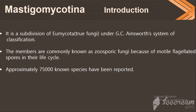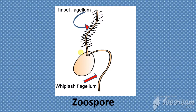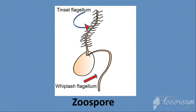Around 75,000 known species exist in this group. The zoospore — a motile, moving spore — is a characteristic or general feature of the members of Mastigomycotina.